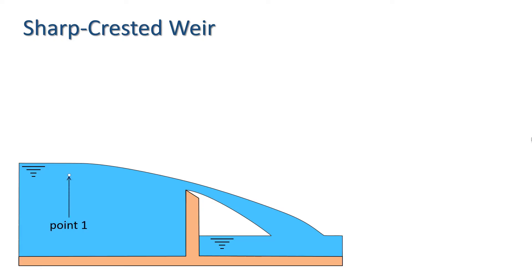Consider a point upstream of the weir on a streamline going through a second point directly above the crest. Taking the elevation of the crest as our datum, let H denote the upstream depth above the crest, and let Z1 be the elevation of point 1 above the datum. The pressure head at point 1 will be H minus Z1, and at point 2 we have what is effectively a jet at atmospheric pressure, so we take the pressure head to be zero.